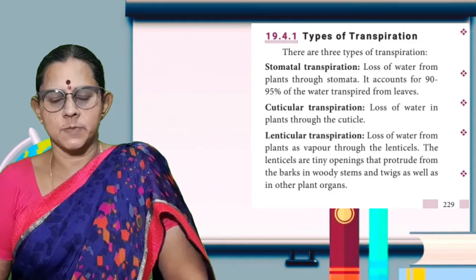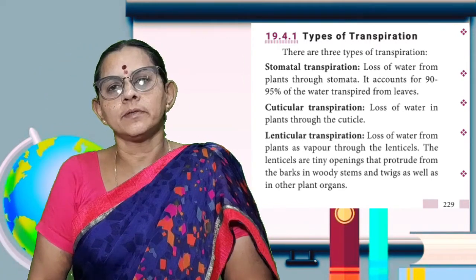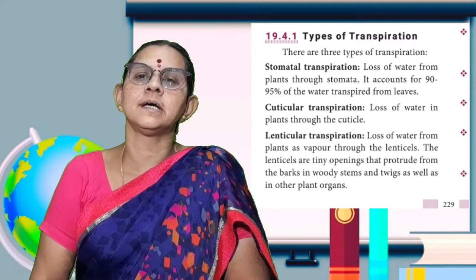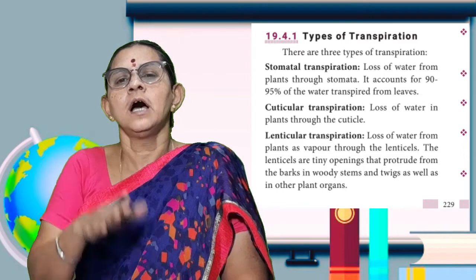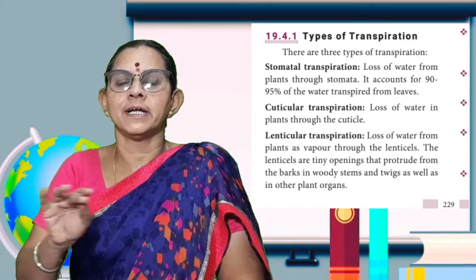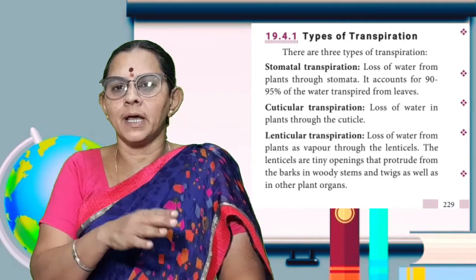Next is cuticular transpiration. The cuticle is a layer on plant parts. It does not absorb water — it is waxy. Transpiration through this layer is called cuticular transpiration.